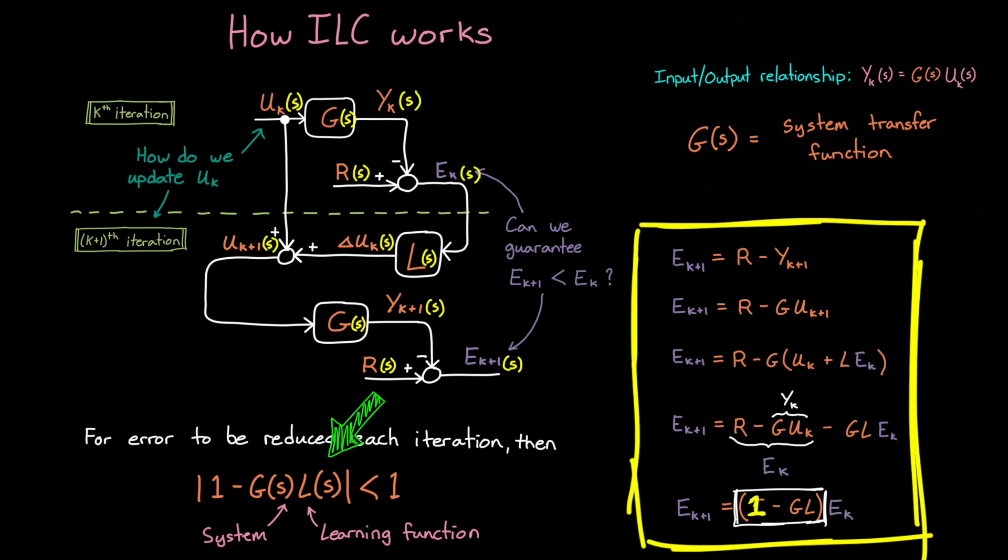So in this case, the question is now, how can we choose l if we don't have a perfect system model g?